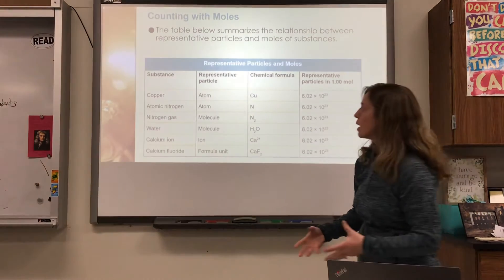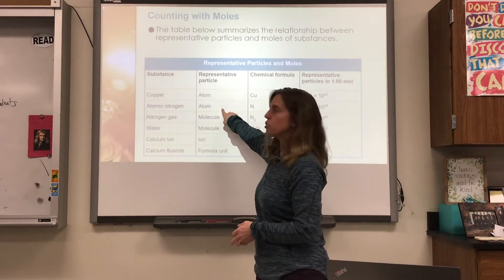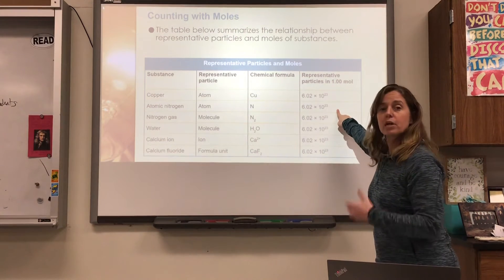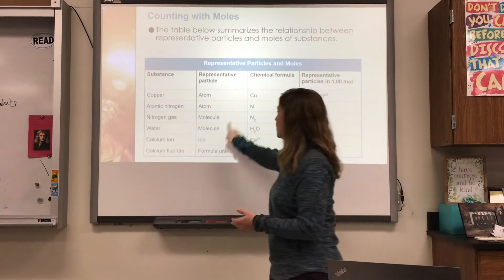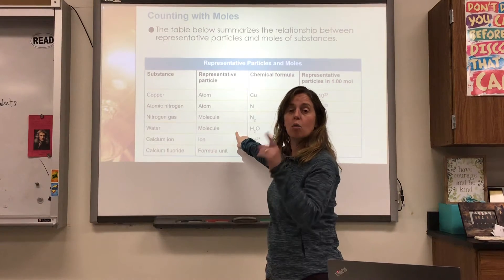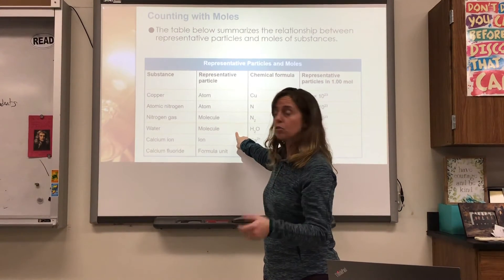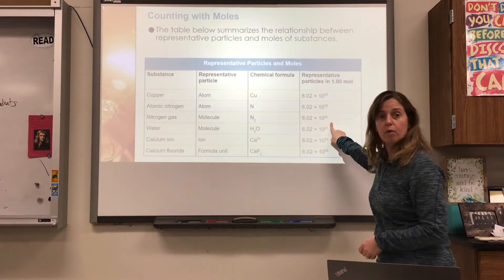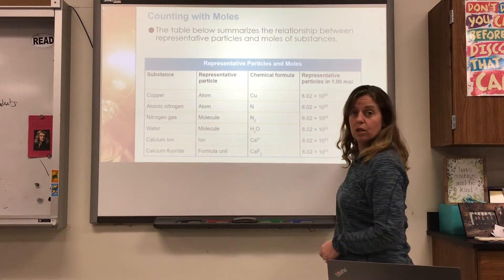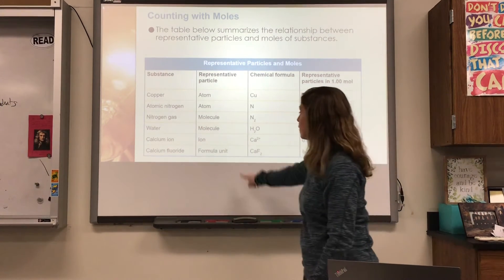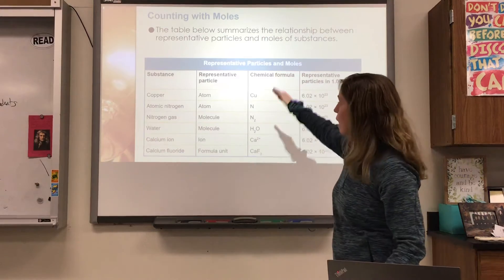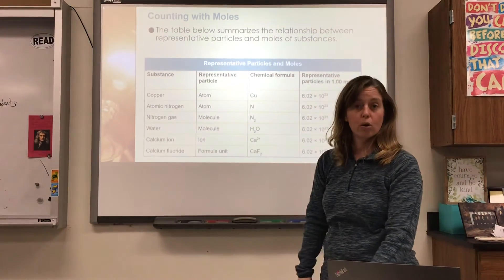If I'm looking at copper or atomic nitrogen, those are atoms — one mole of those equals Avogadro's number. If I have nitrogen gas and water, those are molecules, so one mole of those molecules equals Avogadro's number. If I have an ion such as calcium ion, one mole equals Avogadro's number. A formula unit also equals Avogadro's number per mole. Notice how we classify them by what type of particle each represents.